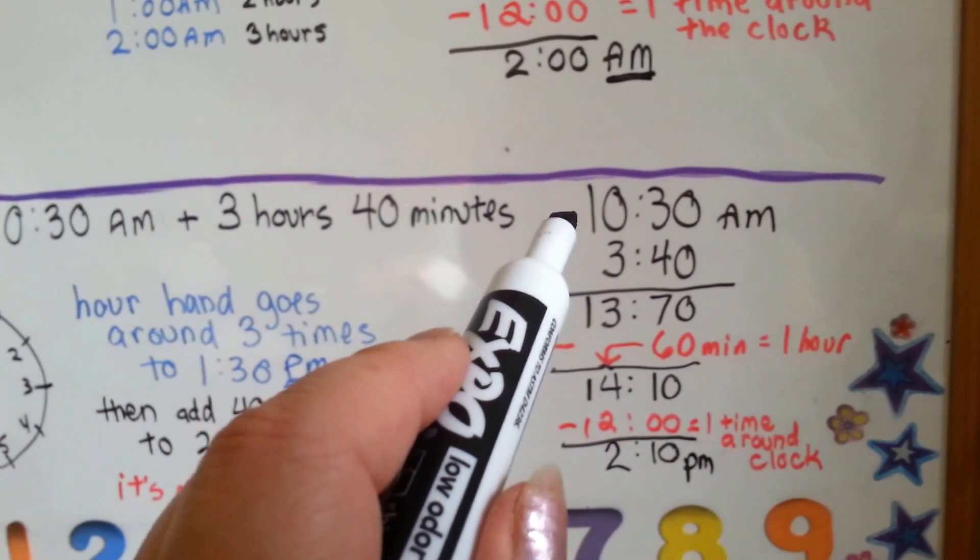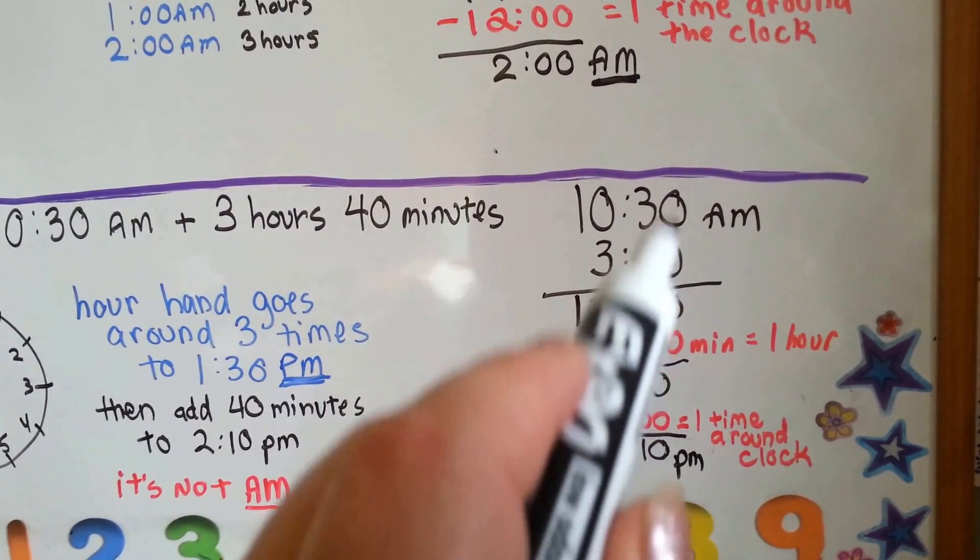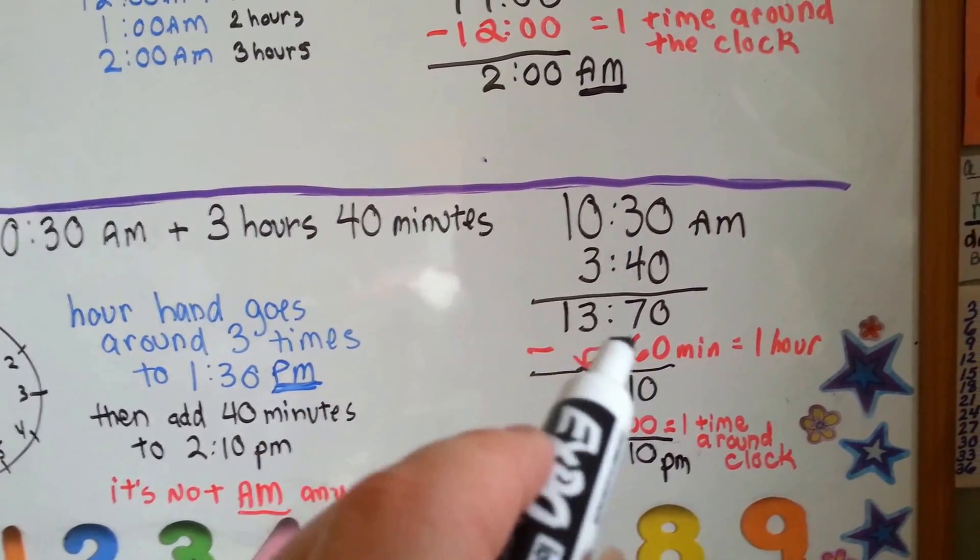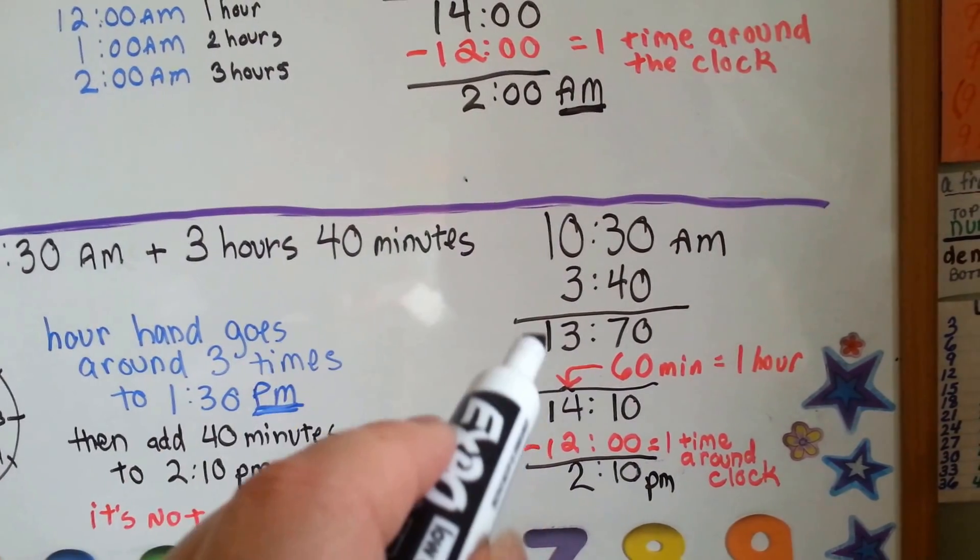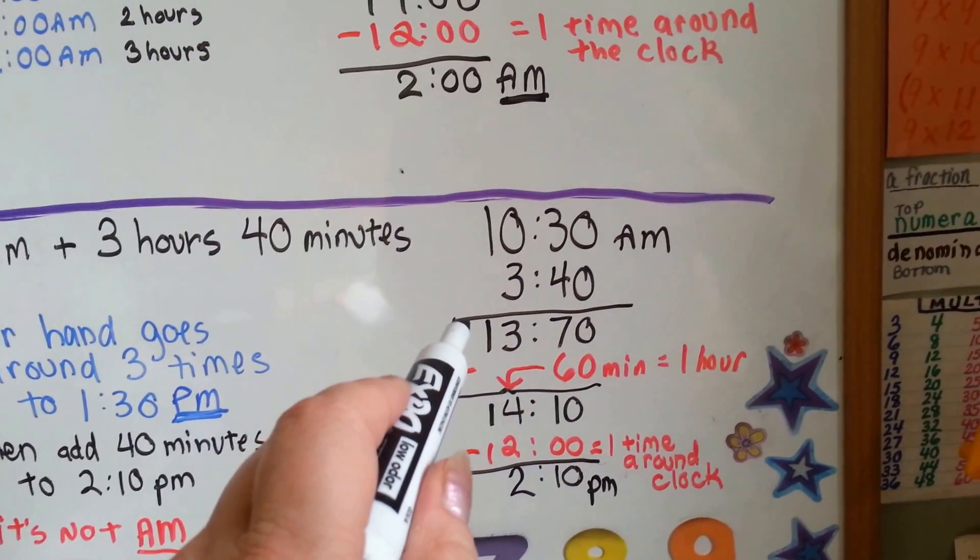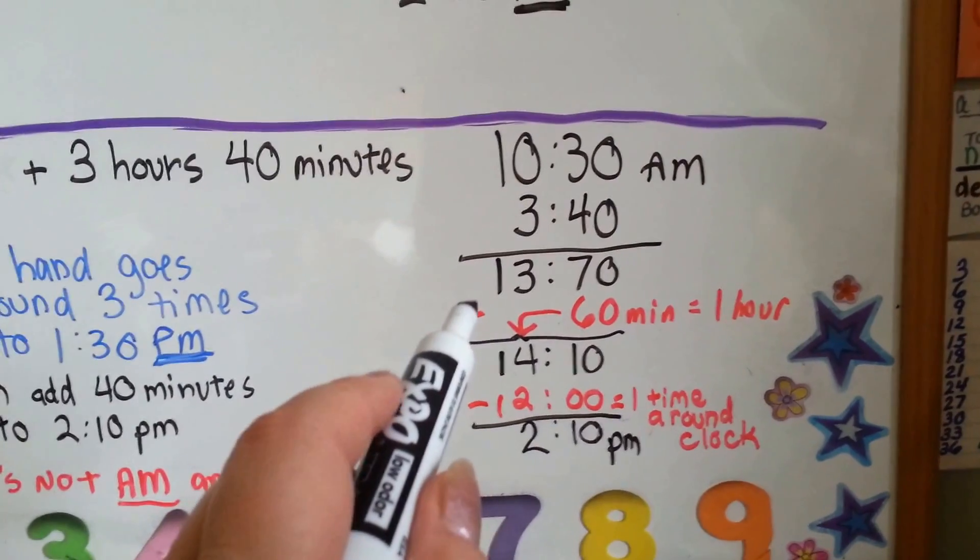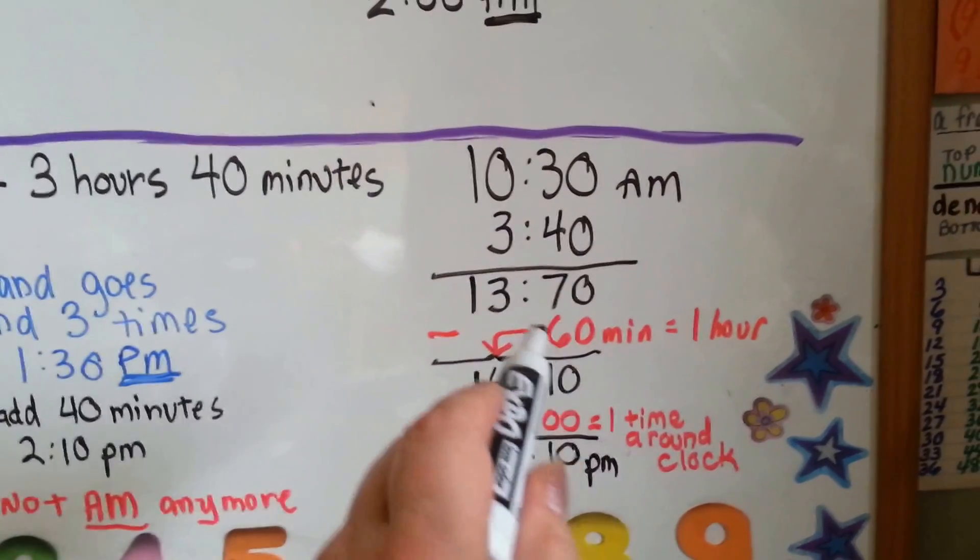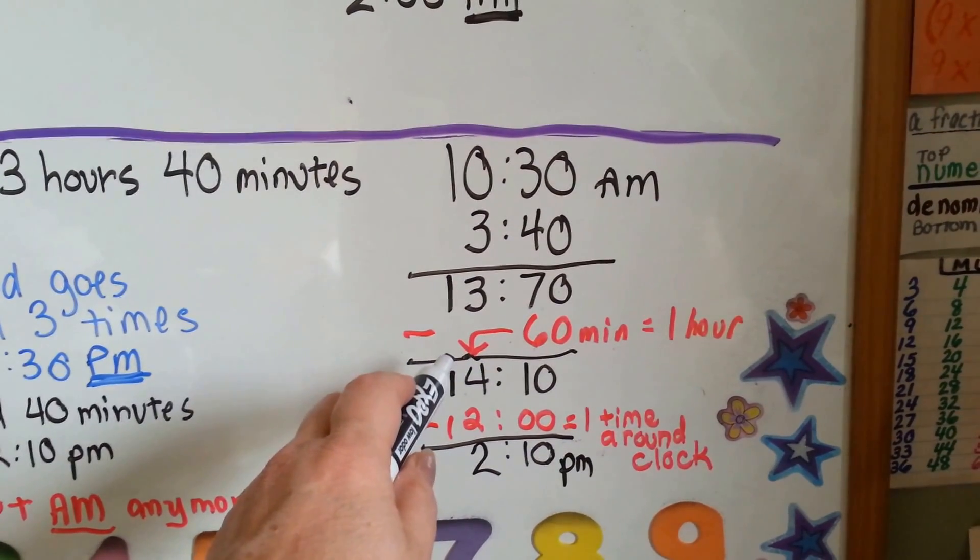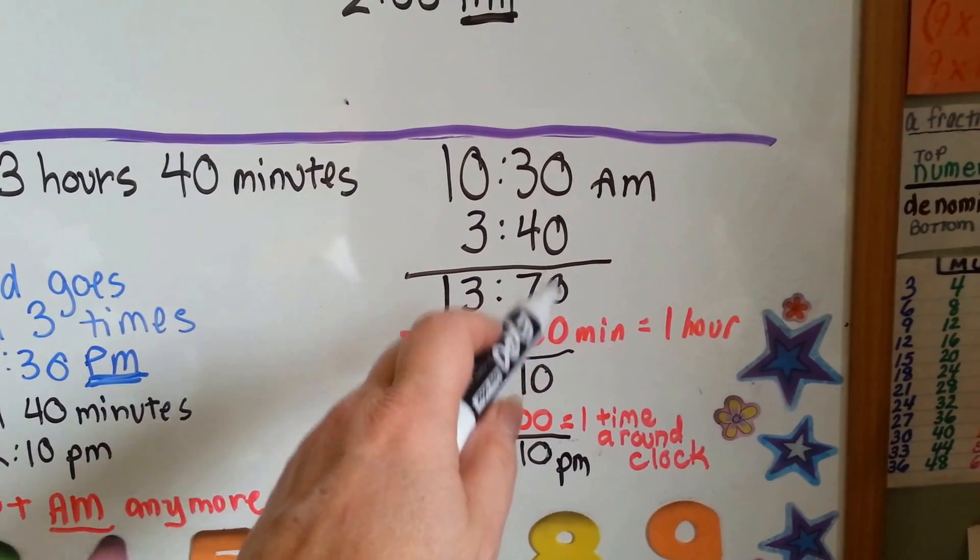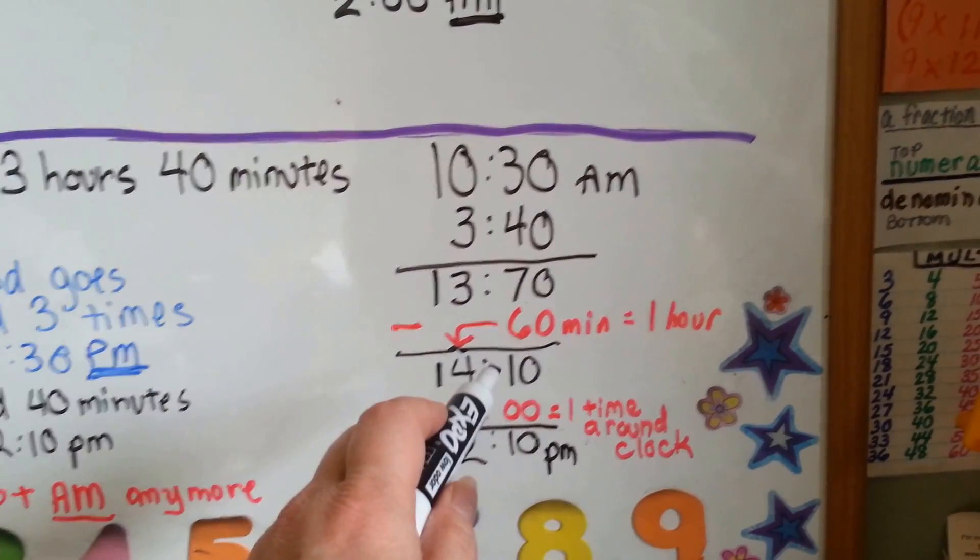So, we have 10:30 AM and our 3 hours and 40 minutes. We add up the ones minutes and get zero. We add up the tens of minutes and we get a 7. And then we add up the hours and get 13. Boy, is that a funny time. 13:70 o'clock? There's no such thing as 13:70 o'clock. So, the first thing we're going to do is regroup an hour out of that 70, and we're going to give it to the 10 side. 70 take away 60 is 10, so now we have 14:10 o'clock.